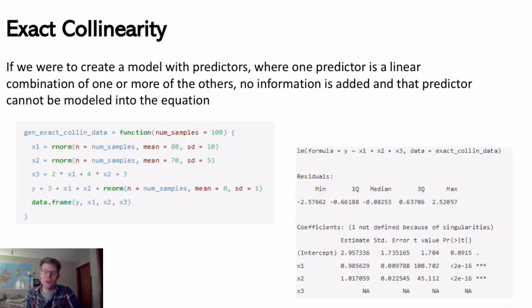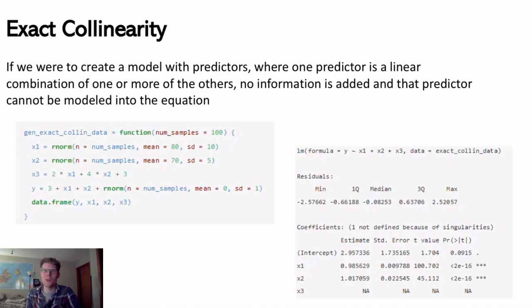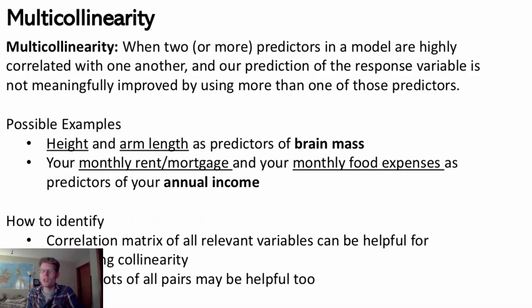This isn't a situation that happens very often realistically unless you do something like try to fit a model with temperature in Fahrenheit and temperature in Celsius as two separate predictors. If you know one, you know the other — they're both just measuring temperature in different units. So unless you're doing that, you're probably not going to encounter exact collinearity.